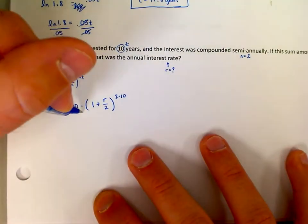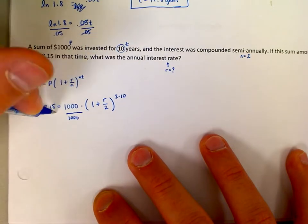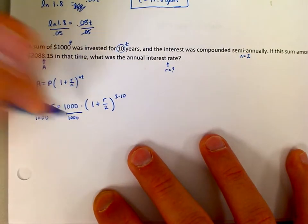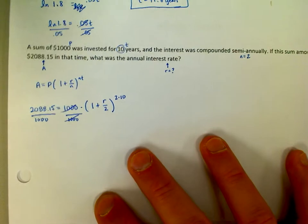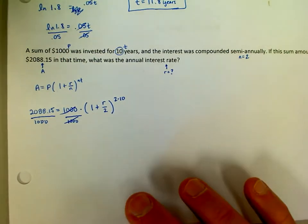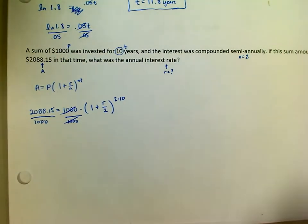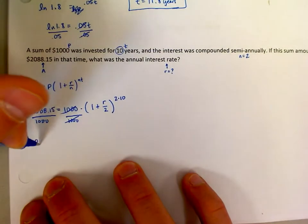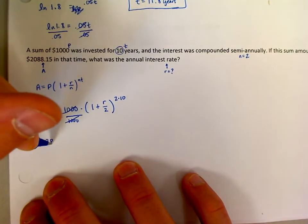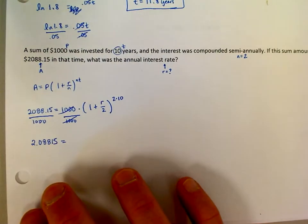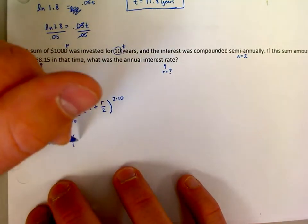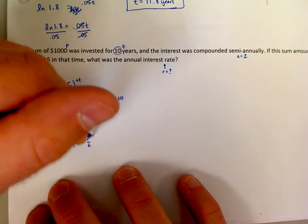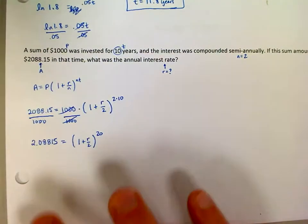First step in every single problem is divide by the principal. So we're going to divide both sides by 1,000. You've heard me say that in the previous two videos, so if you need to know why, go back and watch the first video. On the right-hand side, I do not round this at all. It's 2.008815. I have to keep every single decimal in there. That's equal to 1 plus R over 2 raised to the 20th power.